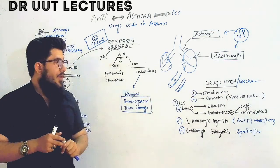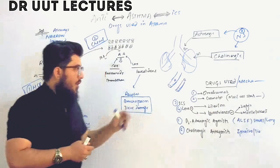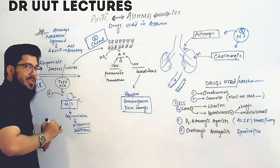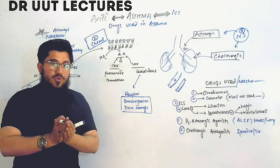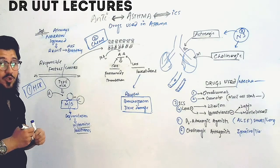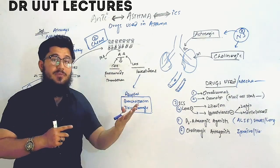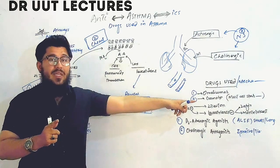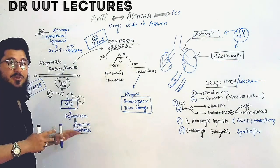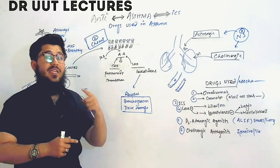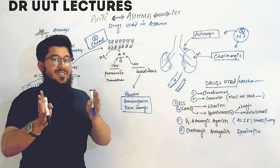The second drug is cromolyn, known as a mast cell stabilizer. When cromolyn is taken, it binds to the mast cells and stabilizes them, preventing degranulation. With no degranulation, there is no release of histamines and leukotrienes. Since histamines and leukotrienes are not available, there is no bronchospasm — instead, bronchodilation occurs.